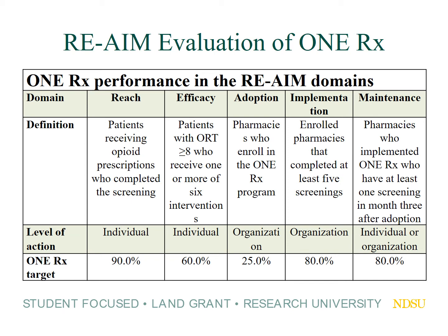The next domain is Adoption. The first two — Reach and Efficacy — have to do with how the program works at an individual patient level. The last three — Adoption, Implementation, and Maintenance — have to do with how the intervention operates at the organizational level. Adoption is the proportion of pharmacies invited to enroll in the 1Rx program that actually do enroll; our target was 25 percent. Implementation is then, of those pharmacies that adopt the program, how many go on to actually implement it with high fidelity — defined as completing at least five patient screenings — with a goal of 80 percent. Finally, Maintenance is defined as pharmacies that implemented 1Rx having still done at least one screening three months after adoption; our target there was also 80 percent.